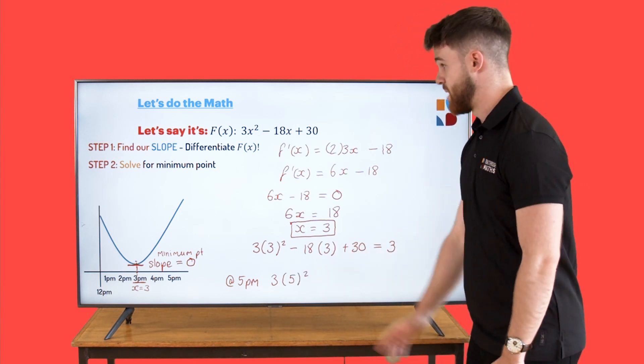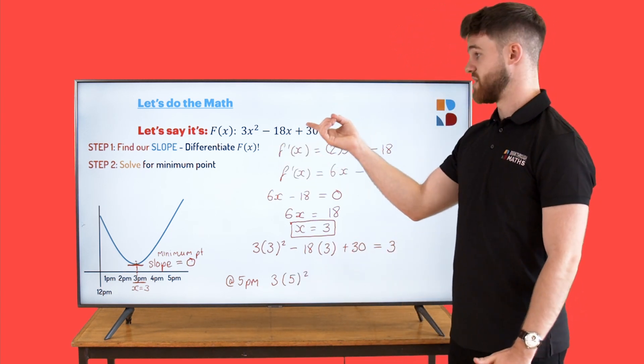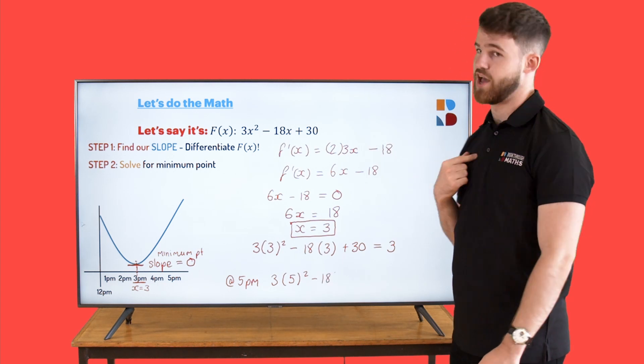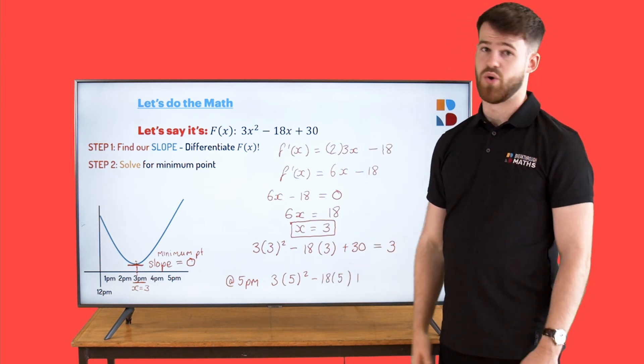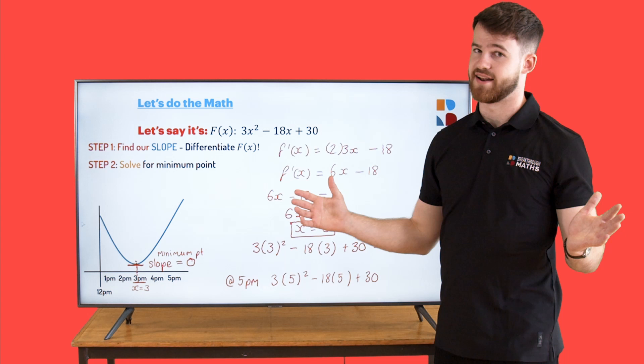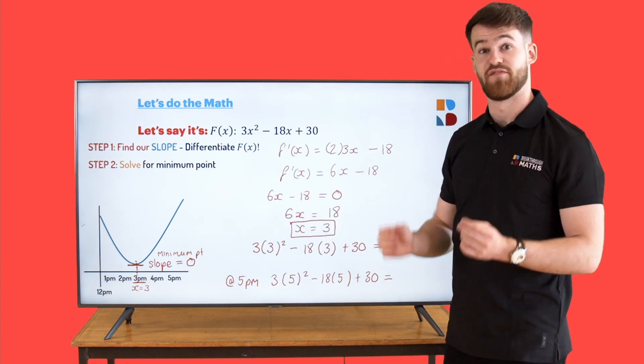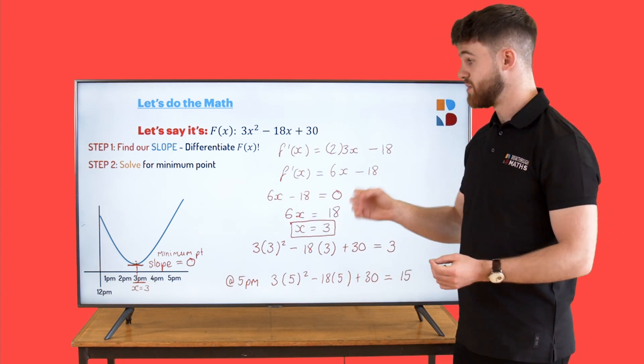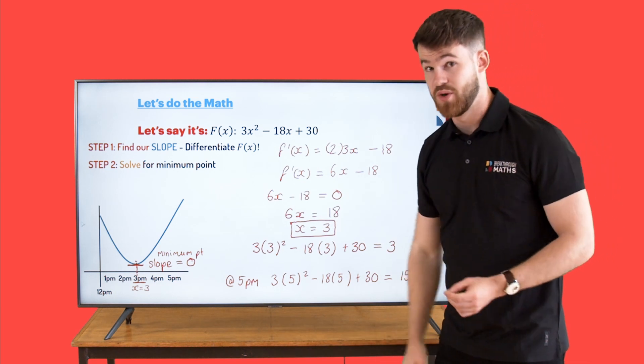So at 5pm, it's going to be 3 times 5² minus 18 times 5 plus 30. Once again, straight into the calculator. And that's going to come out as 15. So GameStop's price at 5pm was €15.